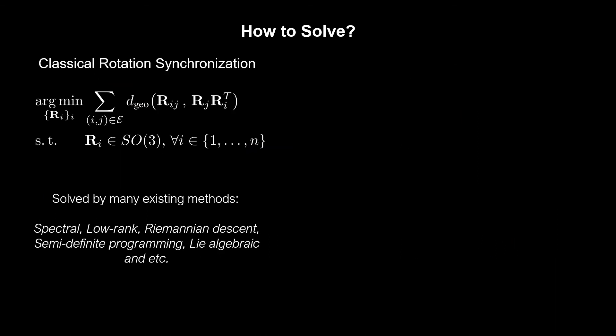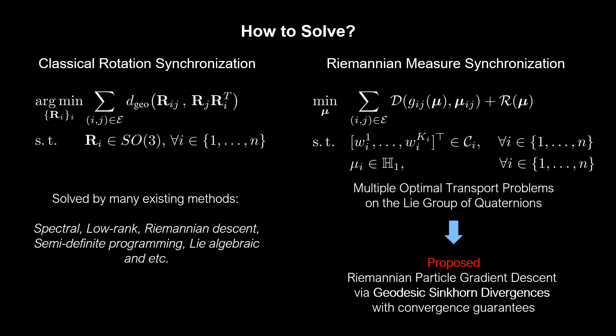While there are many ways to solve the classical synchronization, there is no existing algorithm for the problem we introduce. We propose a globally convergent Riemannian particle descent, solving a set of optimal transport problems, where the ground costs involve the geodesics of the quaternions.